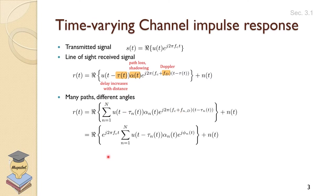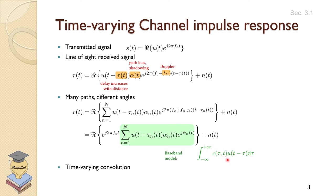If you take the carrier term as a common factor, we get a baseband equivalent model — this is the unmodulated term. This result comes from U of T convolved with the channel response, giving us the baseband model. By comparison, I can extract what the channel looks like using time-varying convolution, replacing U of T with a delta. The last term is the most important: the channel impulse response for a multi-path channel with different paths, delays, amplitudes, and phase shifts.